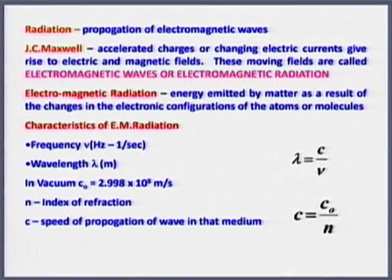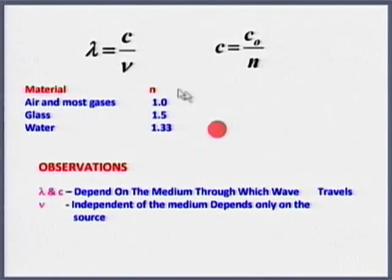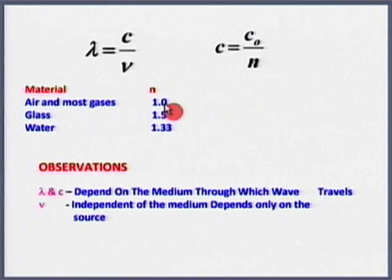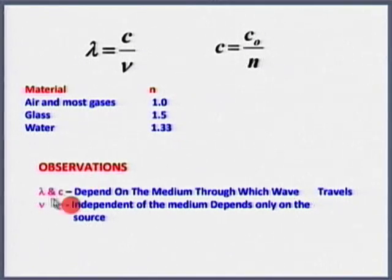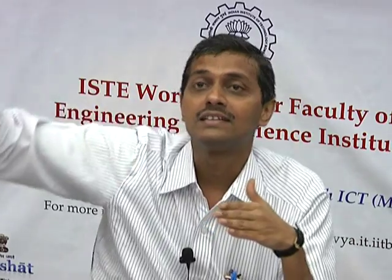The refractive index determines whether a medium is participating or non-participating. Air and most gases have n ≈ 1 (non-participating), while glass (n = 1.5) and water (n = 1.33) are participating. Wavelength and wave speed depend on the medium, but frequency ν depends only on the source and is independent of the medium.